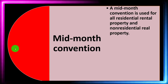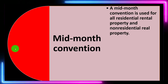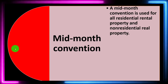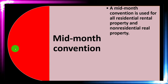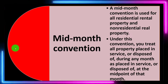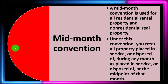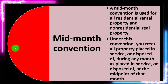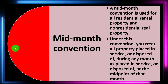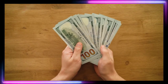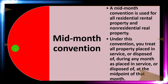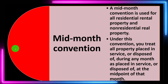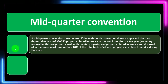The mid-month convention assumes that whatever month you placed the property in service, it was placed in service at the midpoint of that month — essentially the 15th. A mid-month convention is used for all residential rental property and non-residential rental property. Under this convention, you treat all property placed in service or disposed of during any month as placed in service at the midpoint of that month. So whether you bought it on March 3rd or March 28th, it's treated as March 15th.